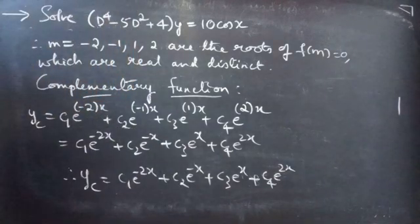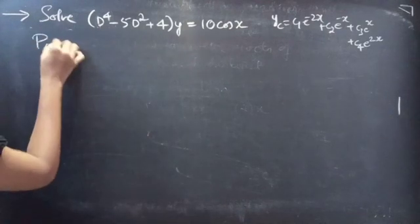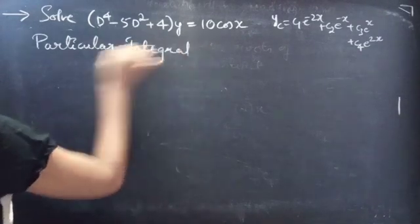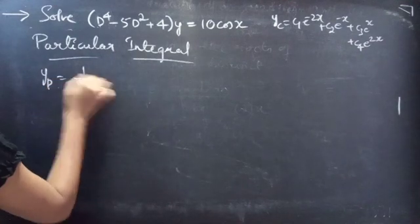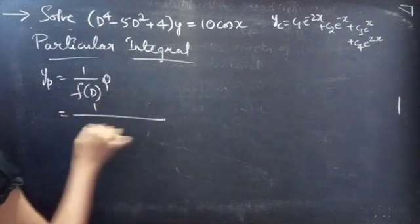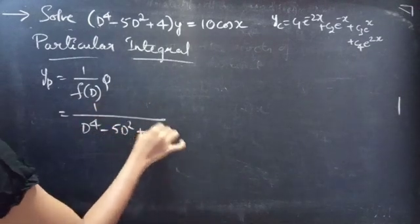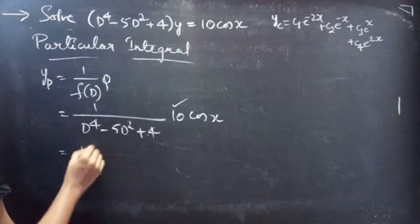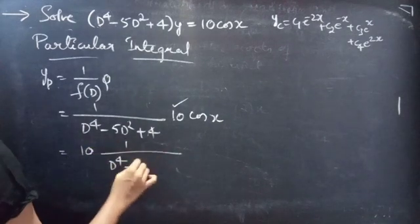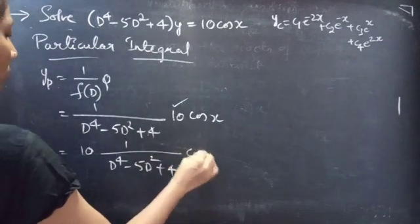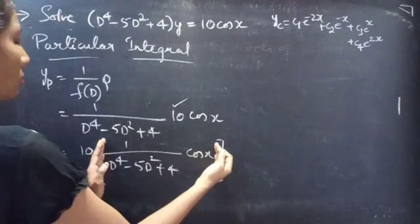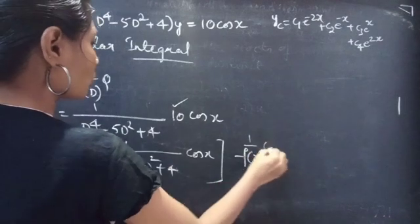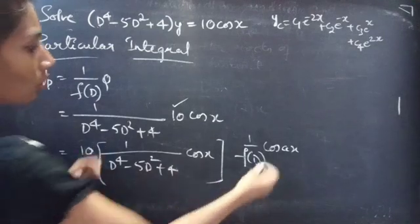Now let's find yp, the particular integral. We can find the particular integral using (1/f(D))·Q. We have f(D) = D⁴ − 5D² + 4 and Q = 10 cos x. We can take the constant outside: yp = 10 · (1/f(D)) · cos x. This is of the form (1/f(D)) · cos(ax) with a = 1.